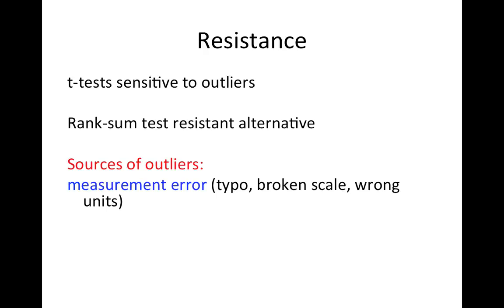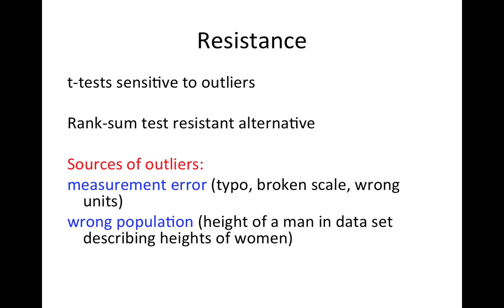Where do outliers come from? If you have an outlier, the first thing you should do is go see if it's a typo or a mistake, because sometimes you can get rid of it that way. Sometimes there's a mistake such as the wrong population. I'm trying to measure the heights of women and a man got in there, and so this person actually shouldn't be there and I can remove him.